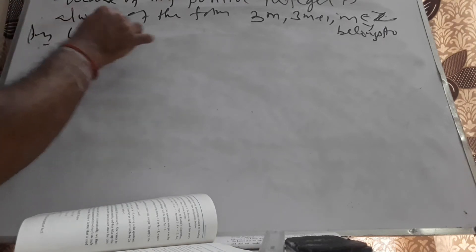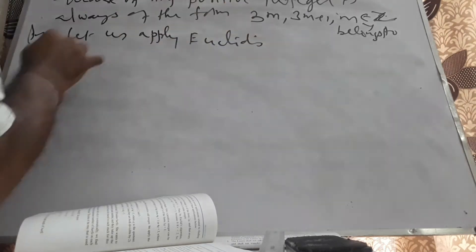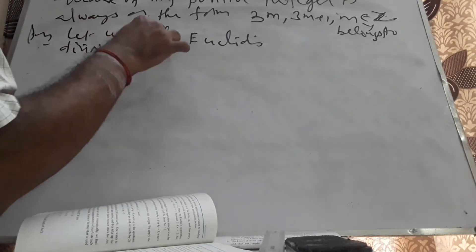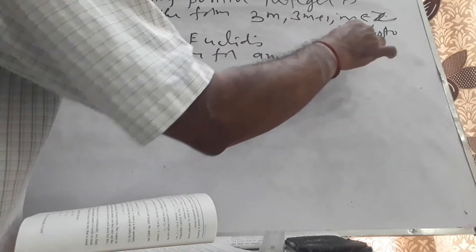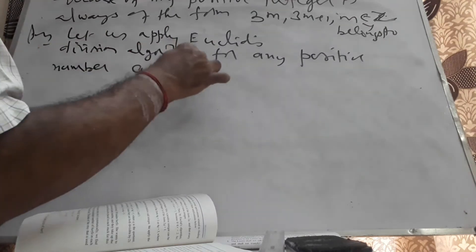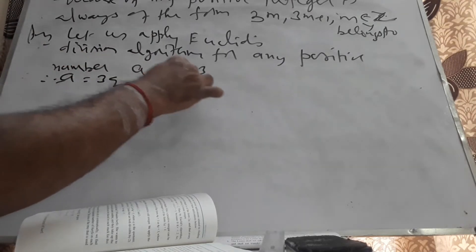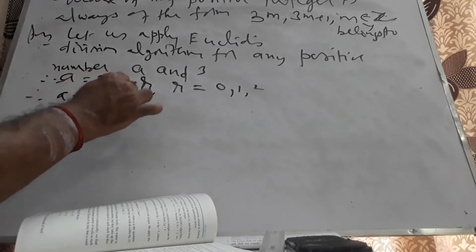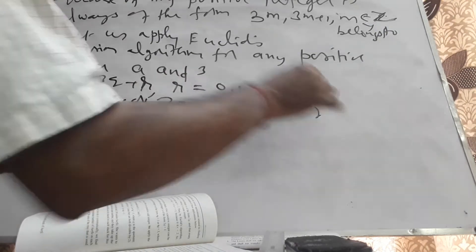Let us apply Euclid's division algorithm for any positive integer a and 3. Therefore a equals 3Q+R, where R equals 0, 1, or 2. Therefore a is either 3Q, or 3Q+1, or 3Q+2.